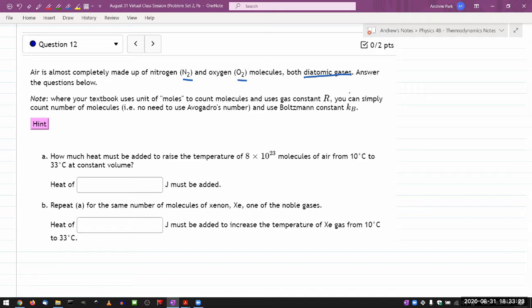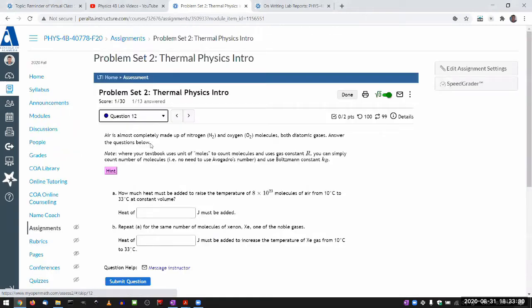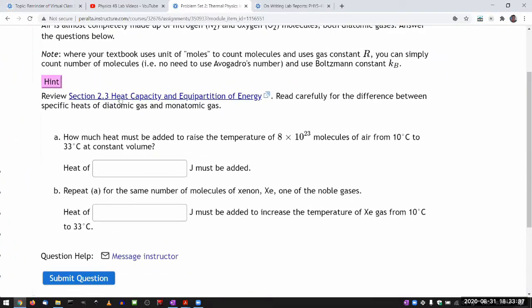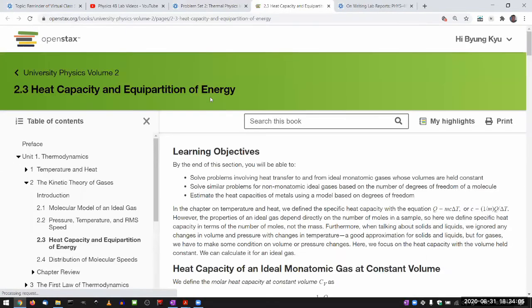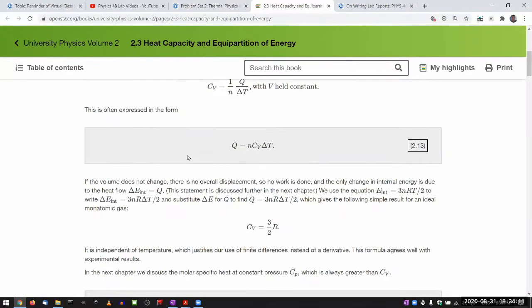Now let me go to the hint and show you what the hint points to, because there's a very specific thing that you should know. So when you click on hint, it says review section 2.3, heat capacity and equipartition of energy. And when you look at specific heat, that's when you have to start to consider some of the properties of ideal gas that go beyond saying it's ideal gas.